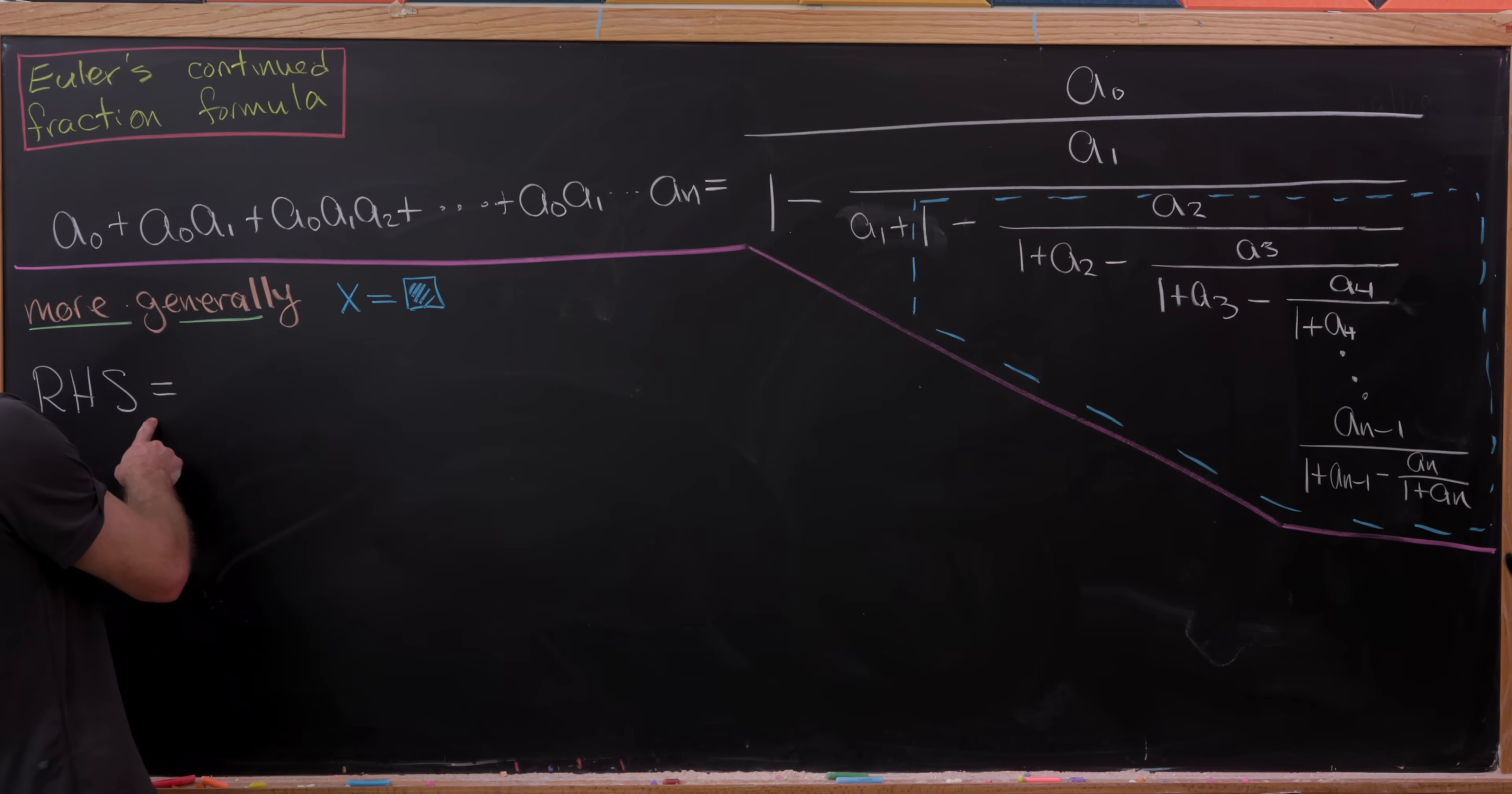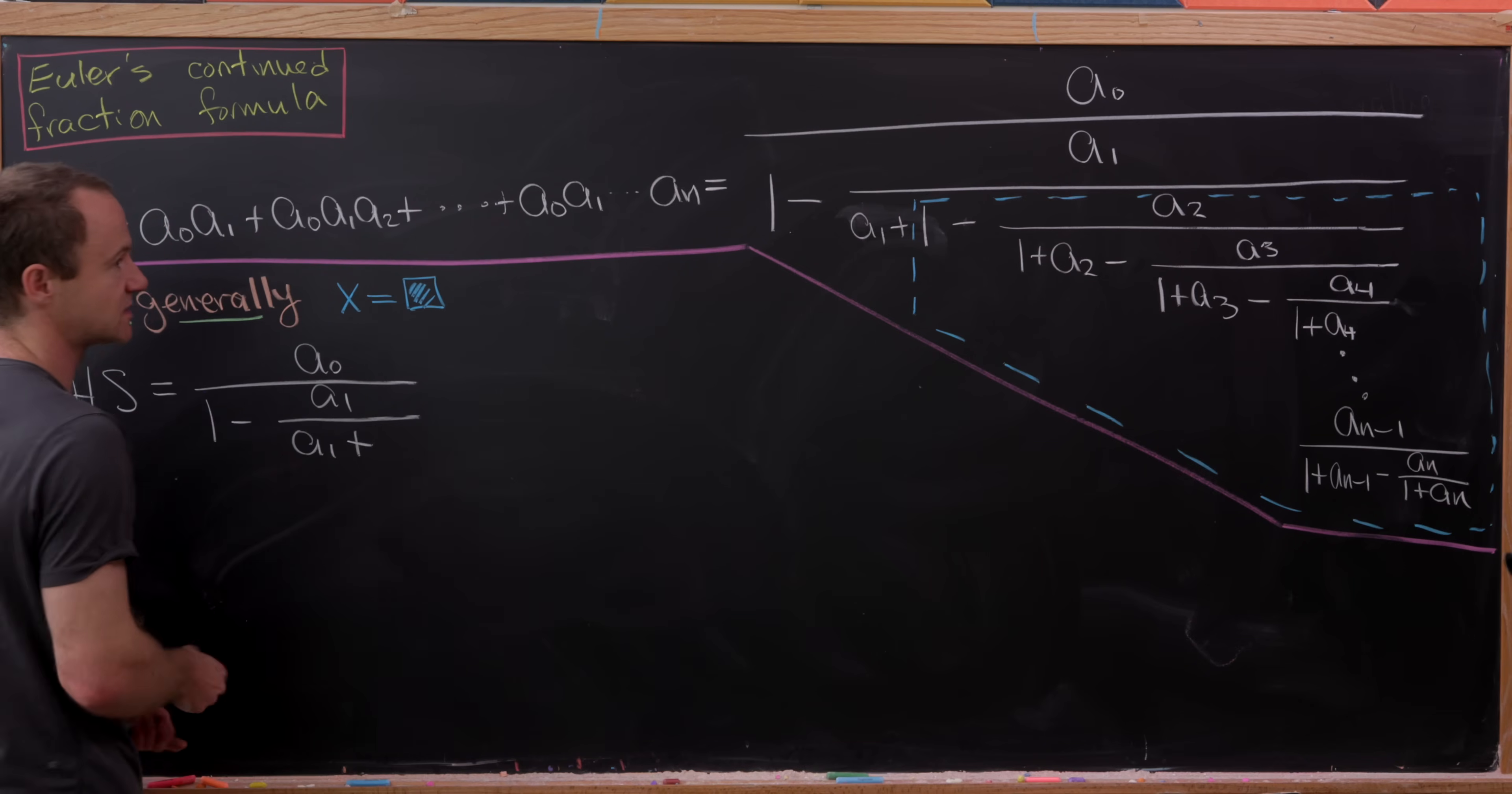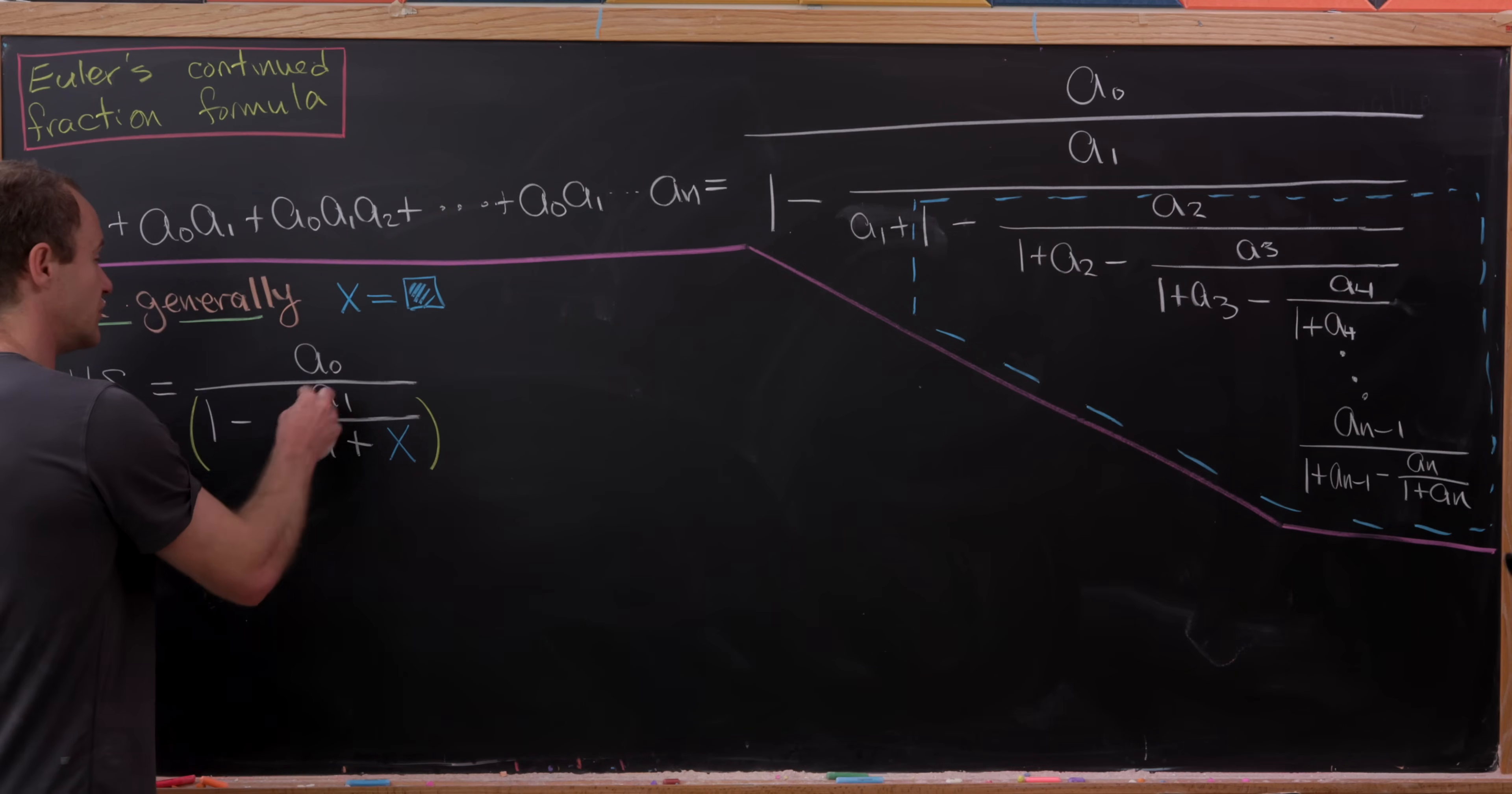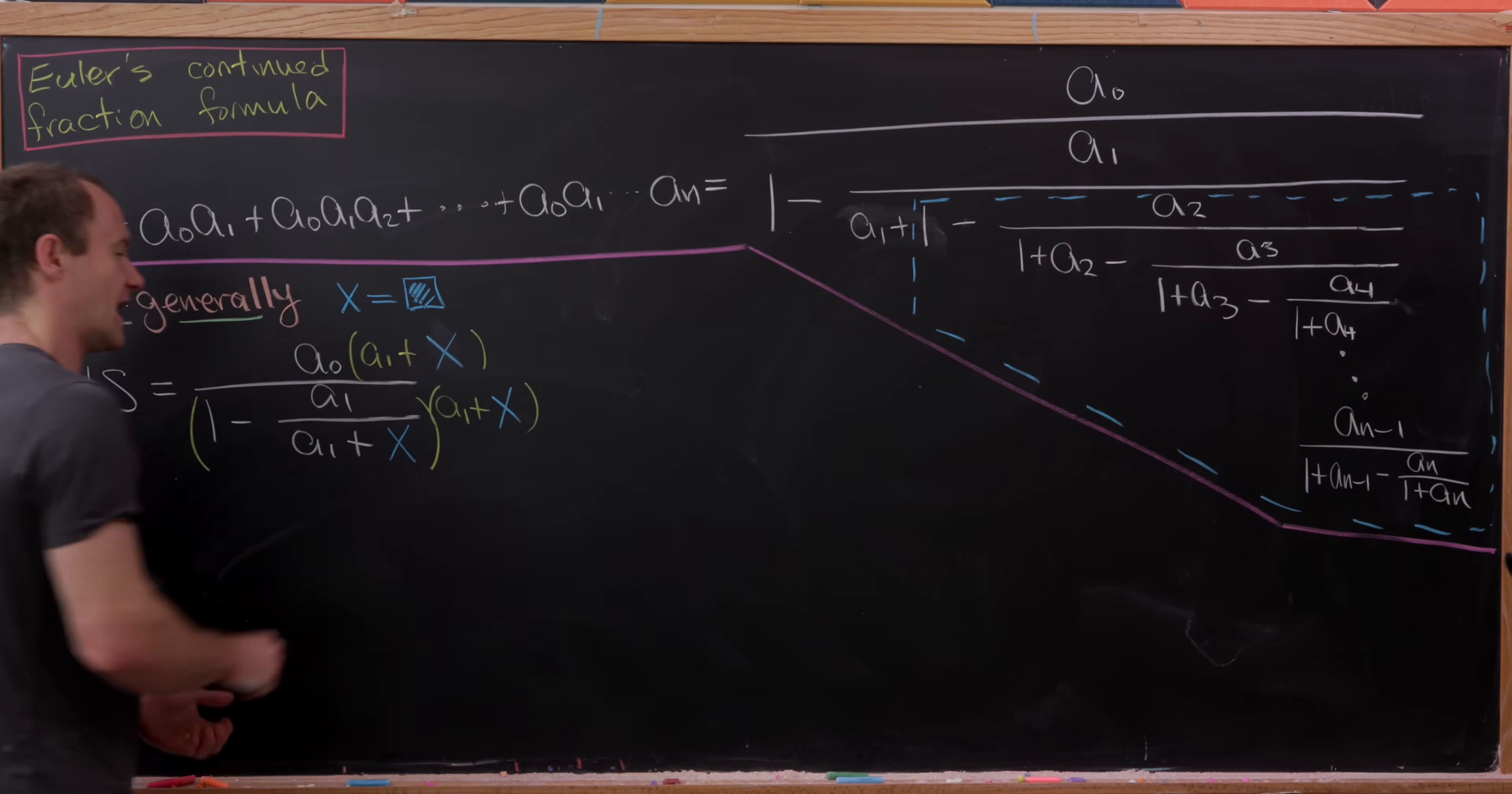So in fact, we'll have the right hand side is equal to let's see, we'll have a0 over 1 minus a1 over a1 plus. Well, everything left over after that is that blue x. But now let's see if we can simplify this a little bit. And we can fairly easily. Let's take the numerator and the denominator and multiply them by a1 plus x. So there I'm doing a1 plus x in both the numerator as well as the denominator.